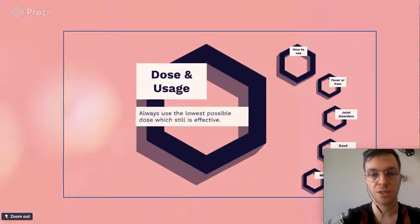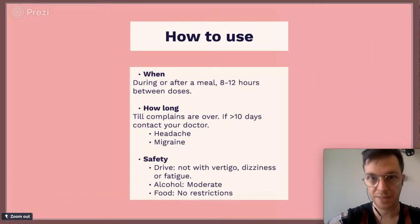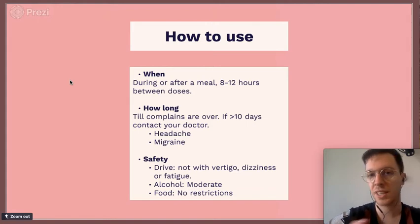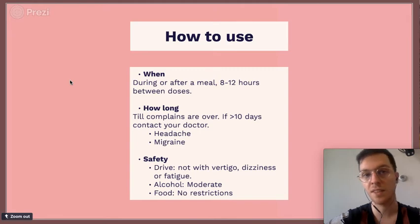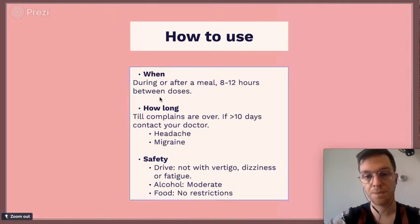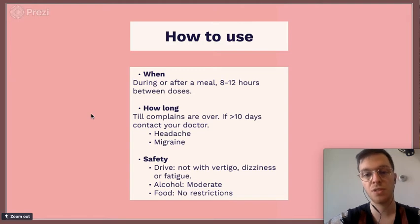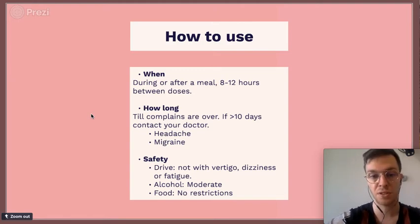Regarding dosage and usage — always use the lowest possible dose that is still effective to minimize side effects. Always take Naproxen with some water before or after a meal; taking it before works a little faster. Wait 8 to 12 hours between doses. Use it until your complaints are over, but if it takes more than 10 days, contact your doctor.